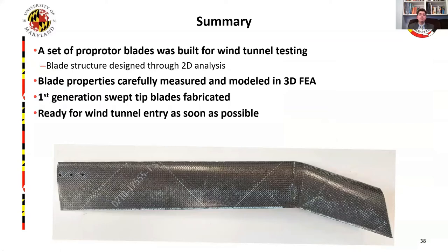In summary, this work describes the building of a set of prop rotor blades for scale model wind tunnel testing. After the structure was designed through 2D analysis, the actual blade properties were carefully measured and modeled in 3D finite element analysis, while ensuring the models match. The measured blade required coupon testing to ensure the most accurate material properties were used for the carbon fiber spar and skin. With this knowledge, we now have the first generation of swept tip blades fabricated and ready for wind tunnel entry as soon as possible.